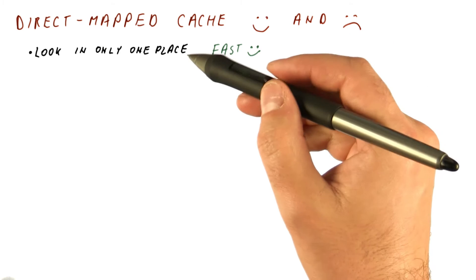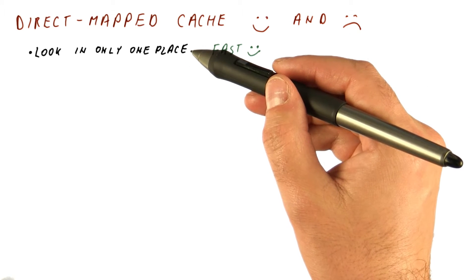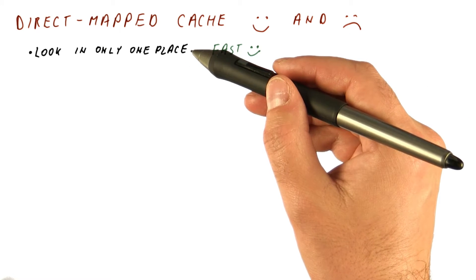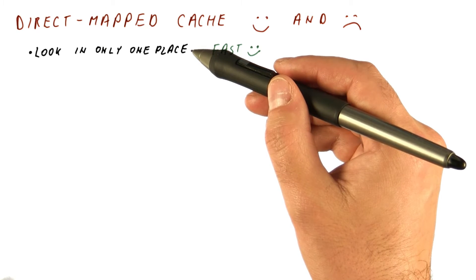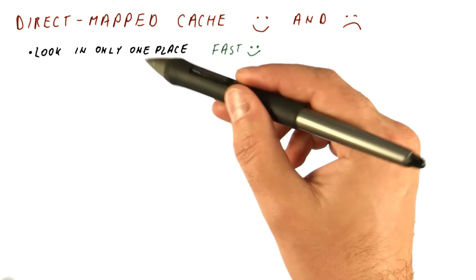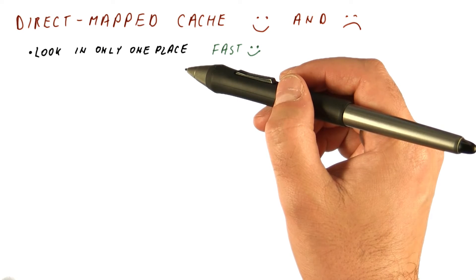That makes this cache fast. If we need to look in more than one place, then we need to wait for all of those to be read out. We then need to figure out which one of them, if any, has it and so on. With a direct-mapped cache, we just check in one place. If it's there, we have it.